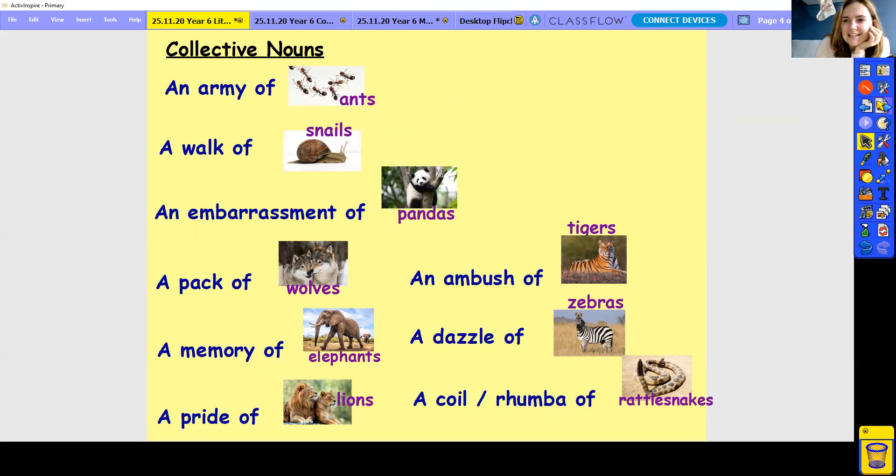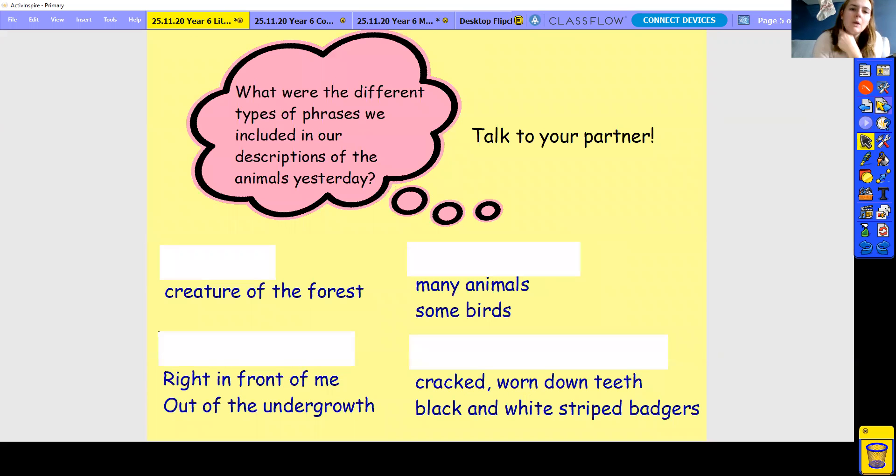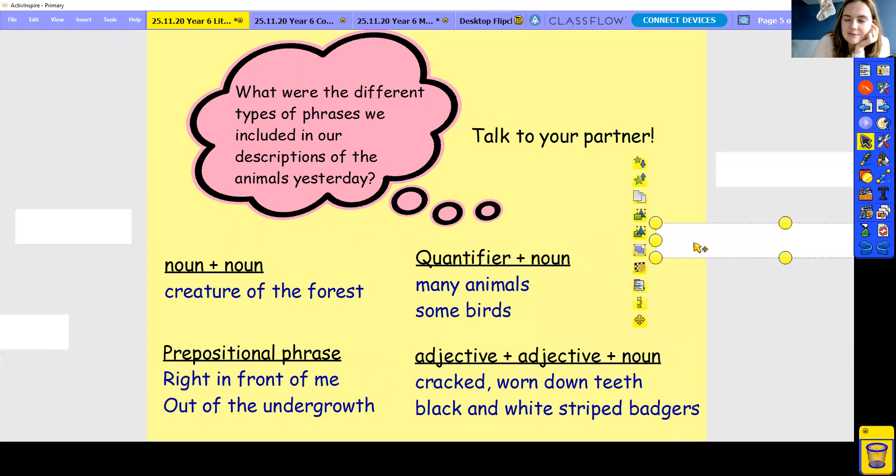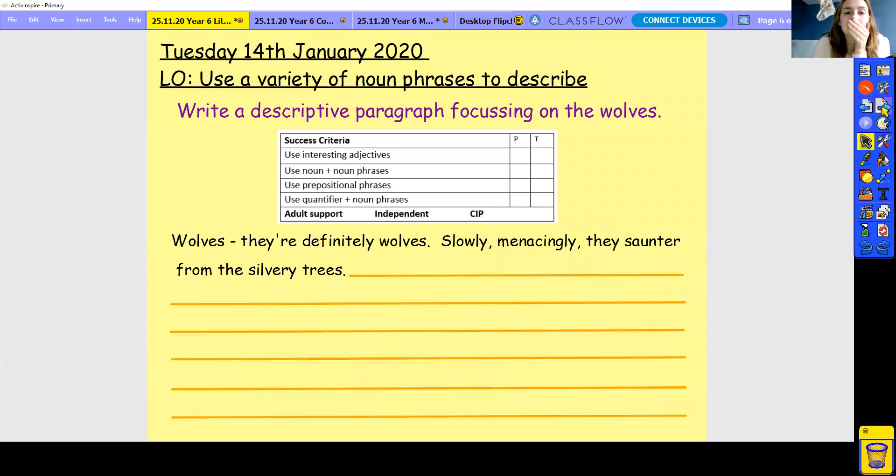So what are the different types of phrases we include in our descriptions of the animals yesterday. So we use something called a noun, a noun, creature of the forest, noun plus noun. We talked about a quantifier in a noun, so like many animals, some birds. And this one was prepositional phrases like right in front of me or out of the undergrowth. And then this one here was adjective, adjective, noun. So we're going to be using these again in our writing today.